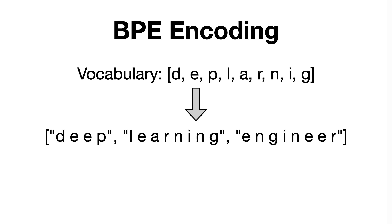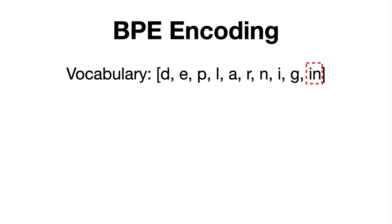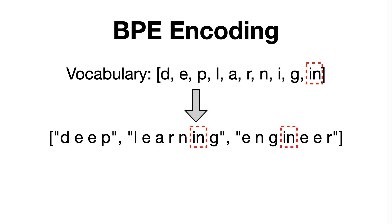Then we iteratively merge the most frequent pair of characters, which in our case is either IN or EE, and add the merged group into the vocabulary. Let's say that we choose to add IN. Now if we were to tokenize the sentence again using the vocabulary, we would obtain the following. We can see that both the word 'learning' and 'engineer' are tokenized differently and now include the IN pair of characters.